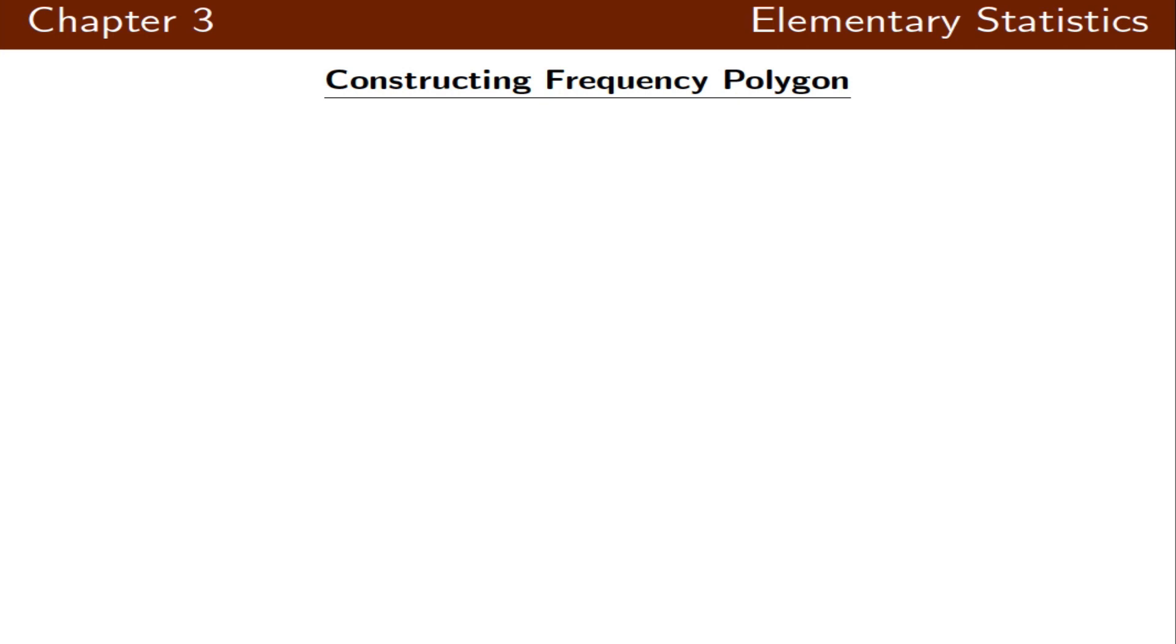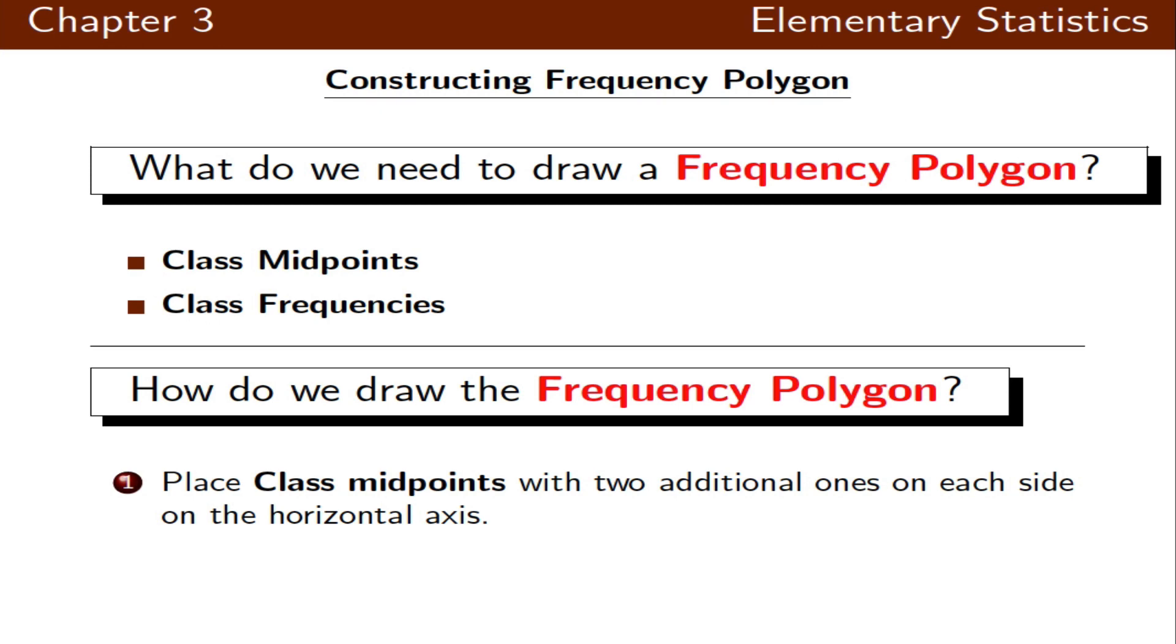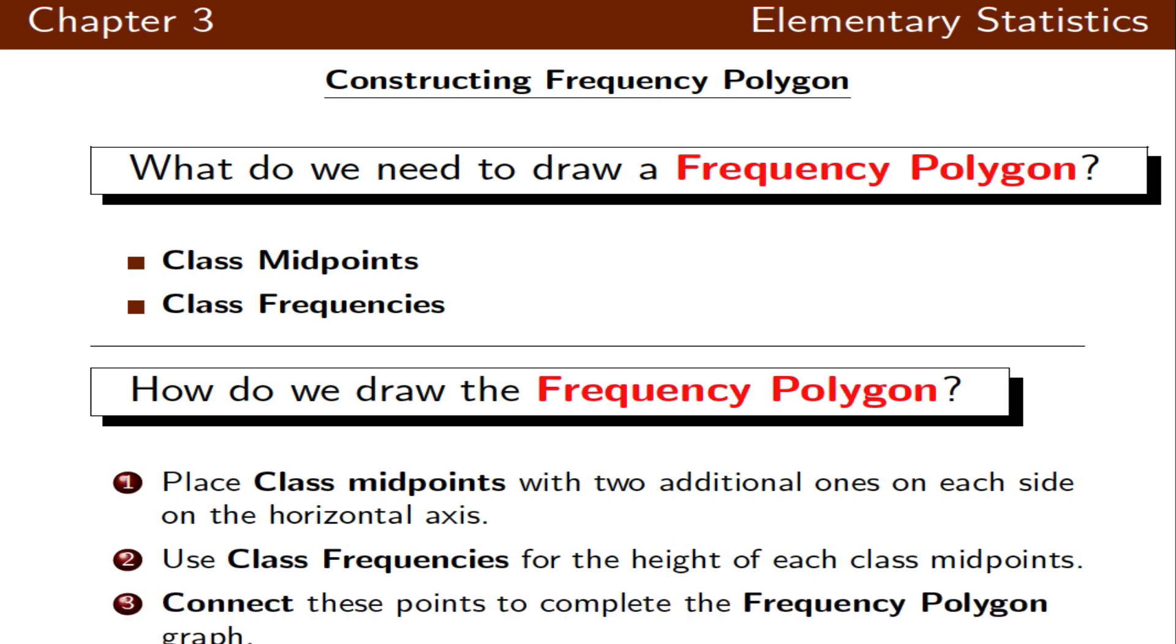Now let's draw a frequency polygon. For the frequency polygon we need class midpoints and class frequencies. We place the class midpoints with two additional ones on each side on the horizontal axis, then use the class frequencies for the height of each class midpoint. We connect these points to complete the frequency polygon graph.